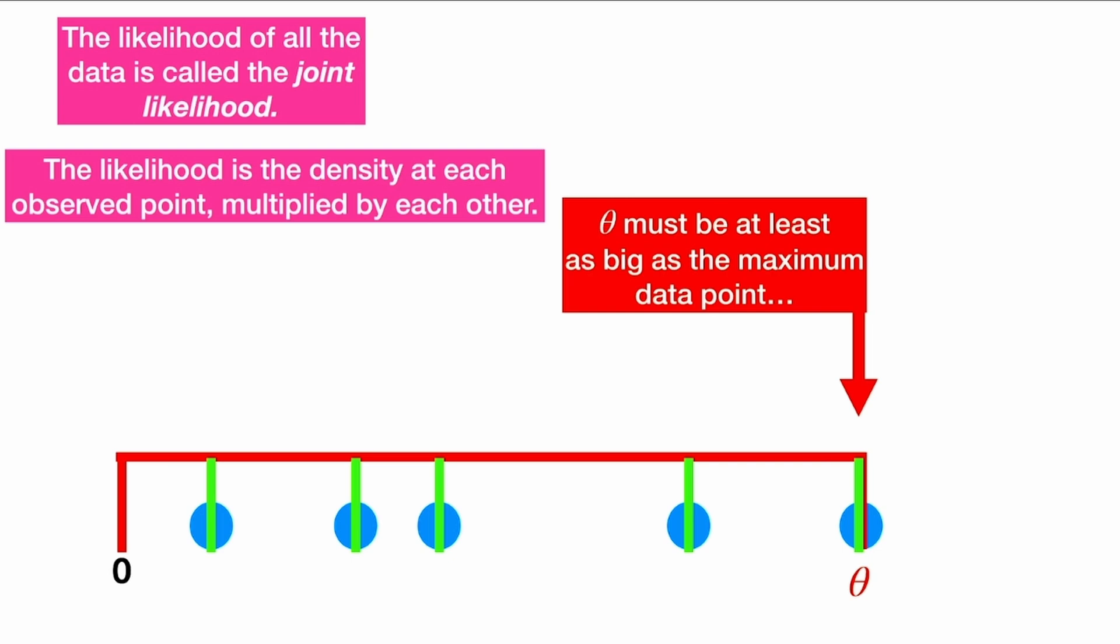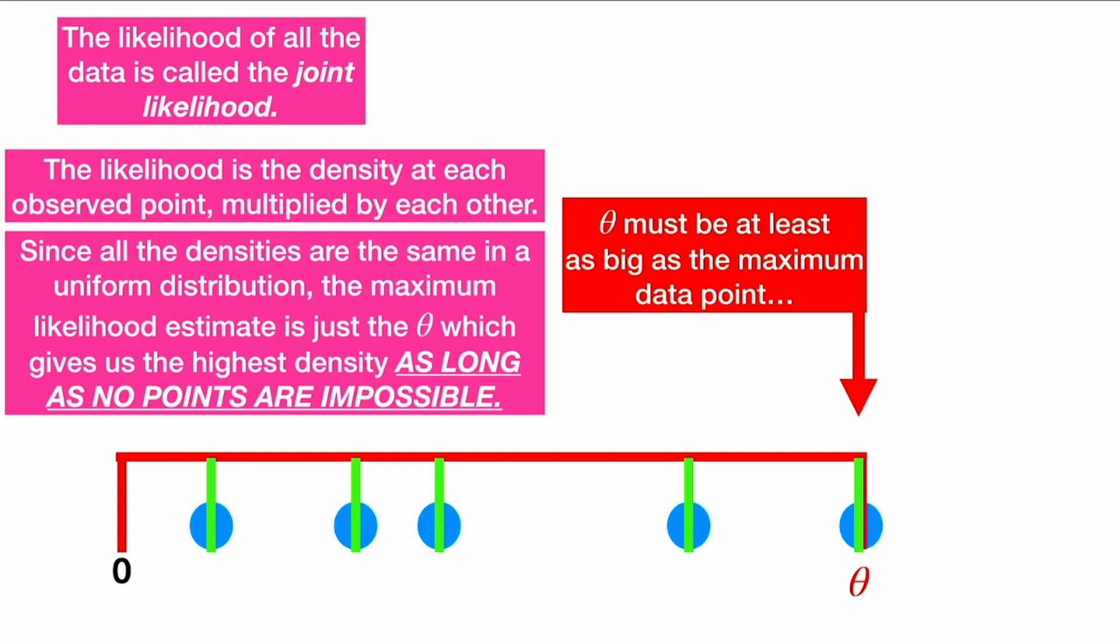We're multiplying all these green lines, but because they are all the same in the uniform distribution—all the same height—then the maximum likelihood estimate is really just the θ which gives us the highest density in general. So as long as no points are impossible, we want the density function to be as high as possible.